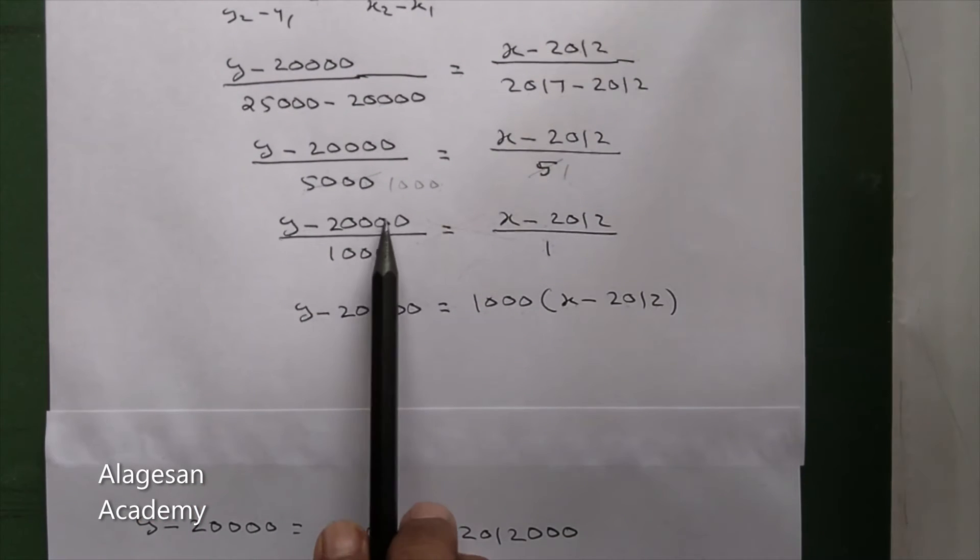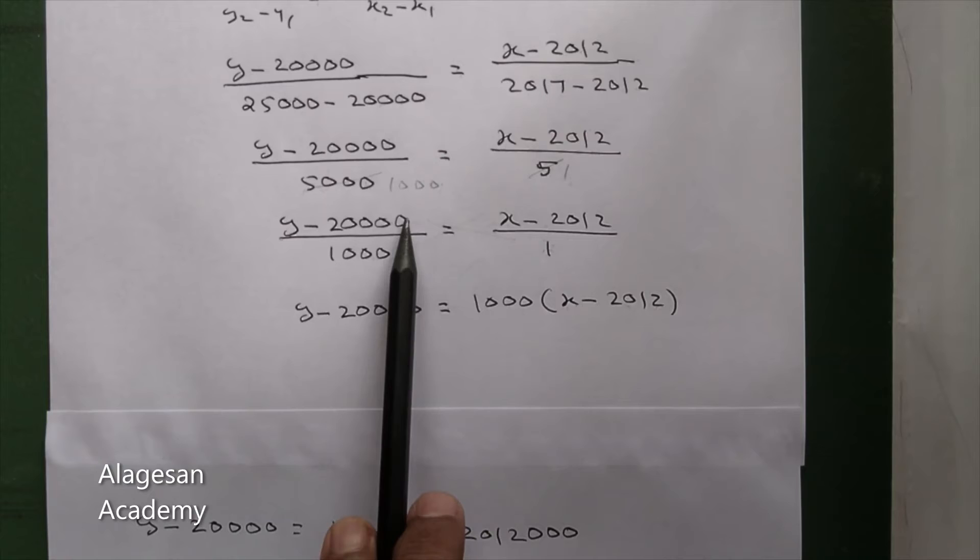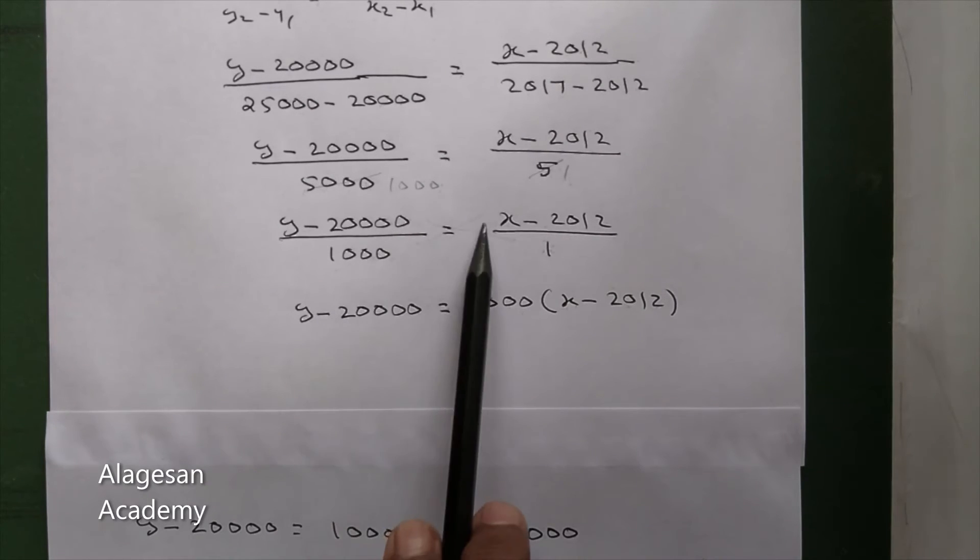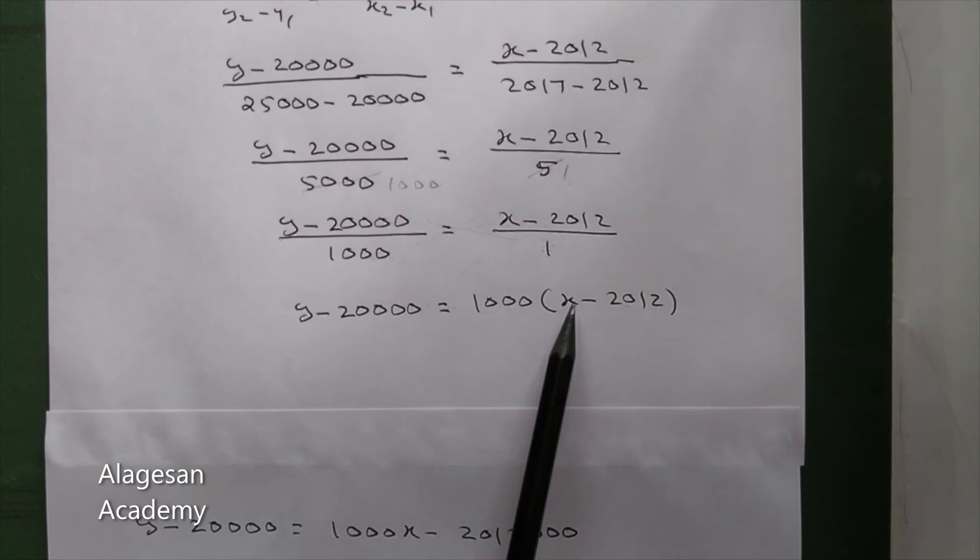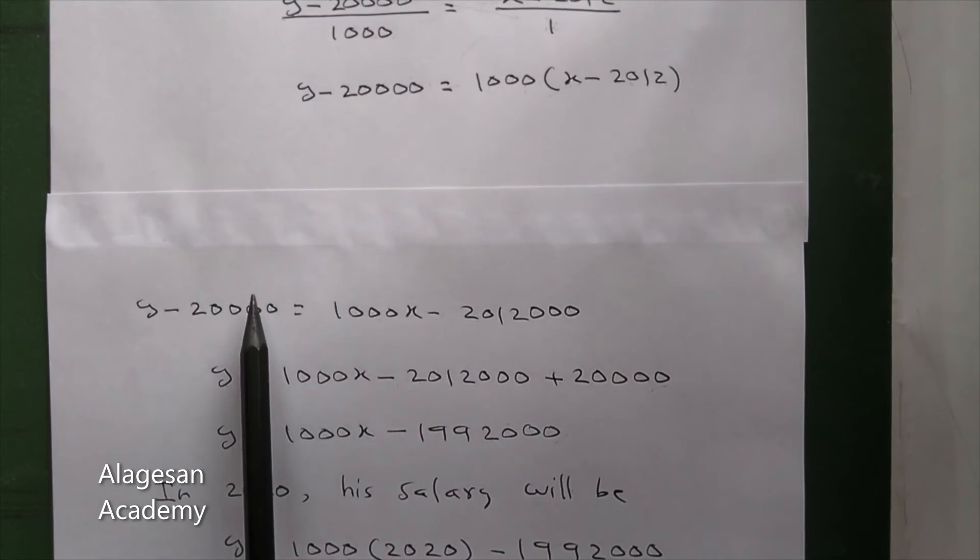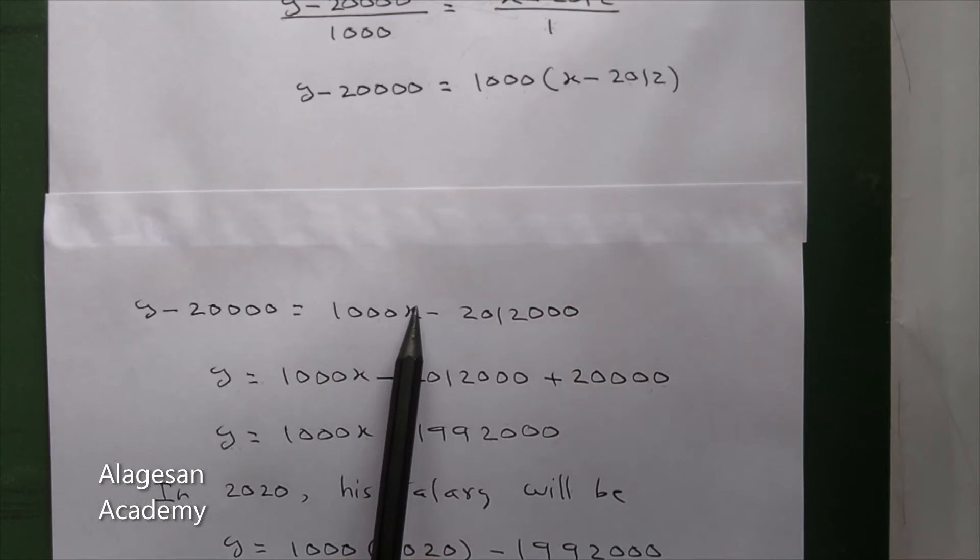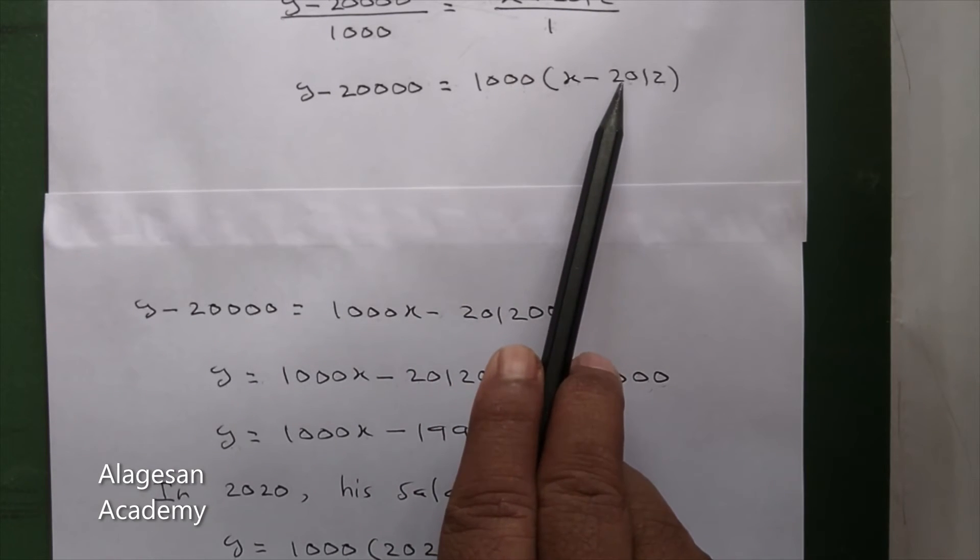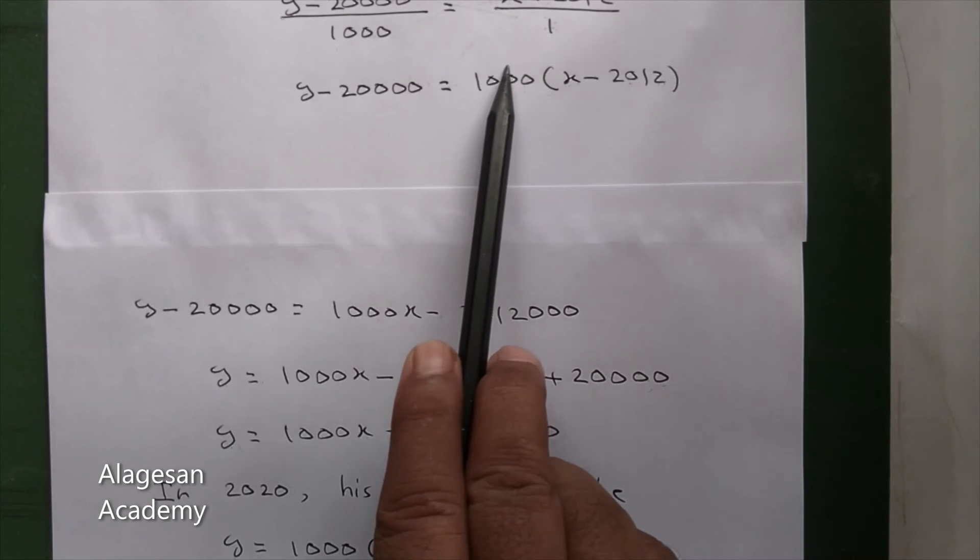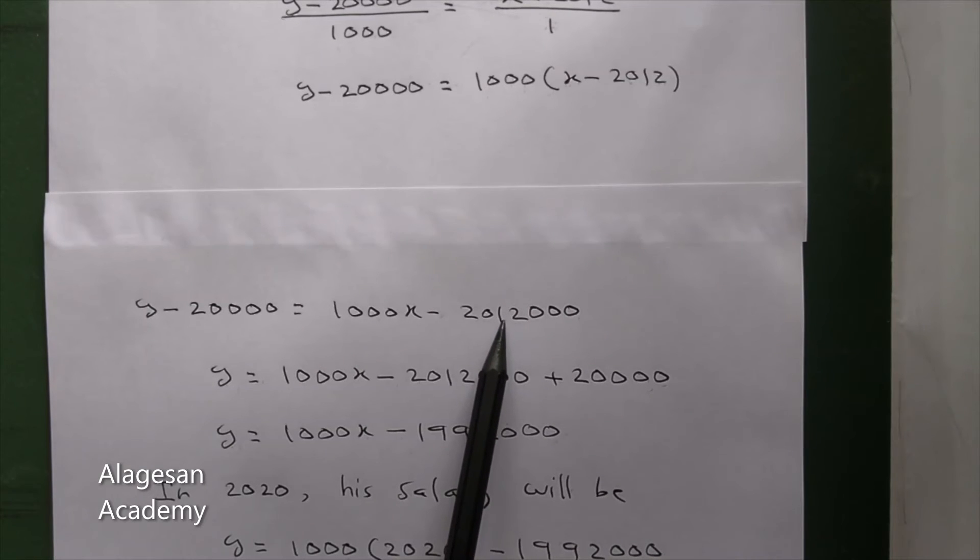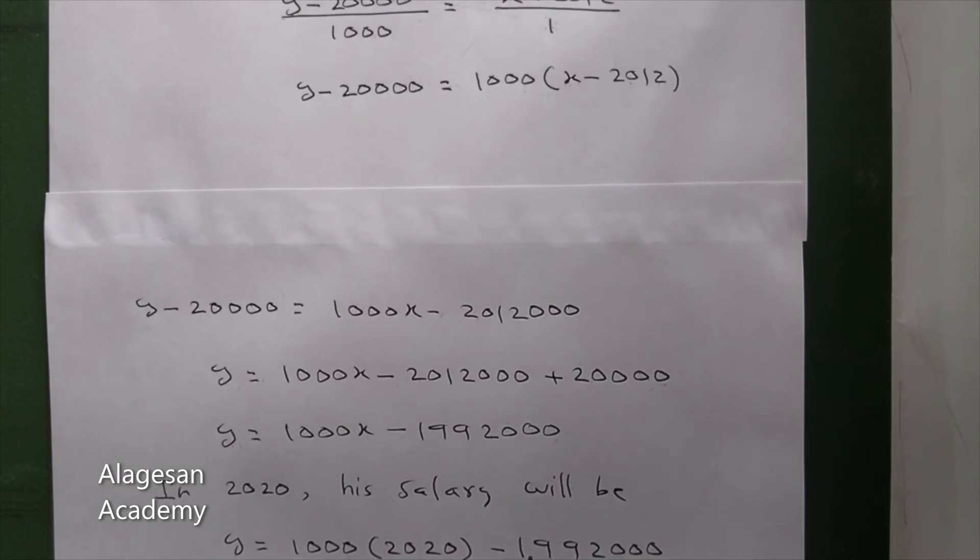Next, cross multiply. This into this. So this is 1,000 into x minus 2,012. Now left side, right side, 1,000 into x minus this into this, 2,012. So 2,012,000, 20,000.